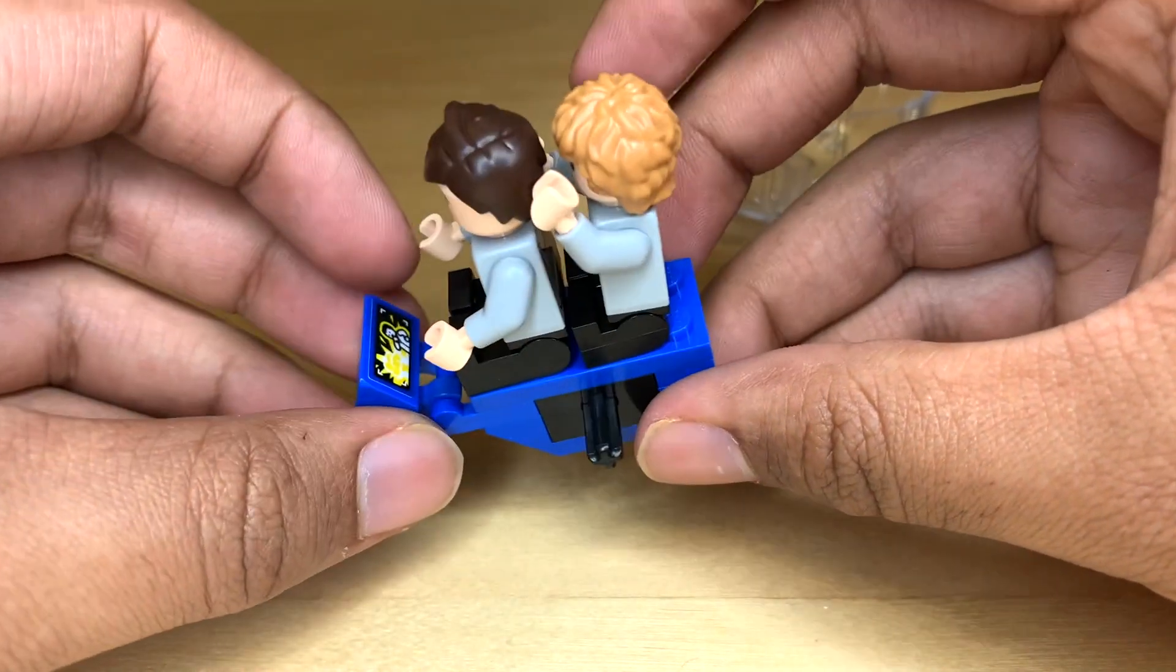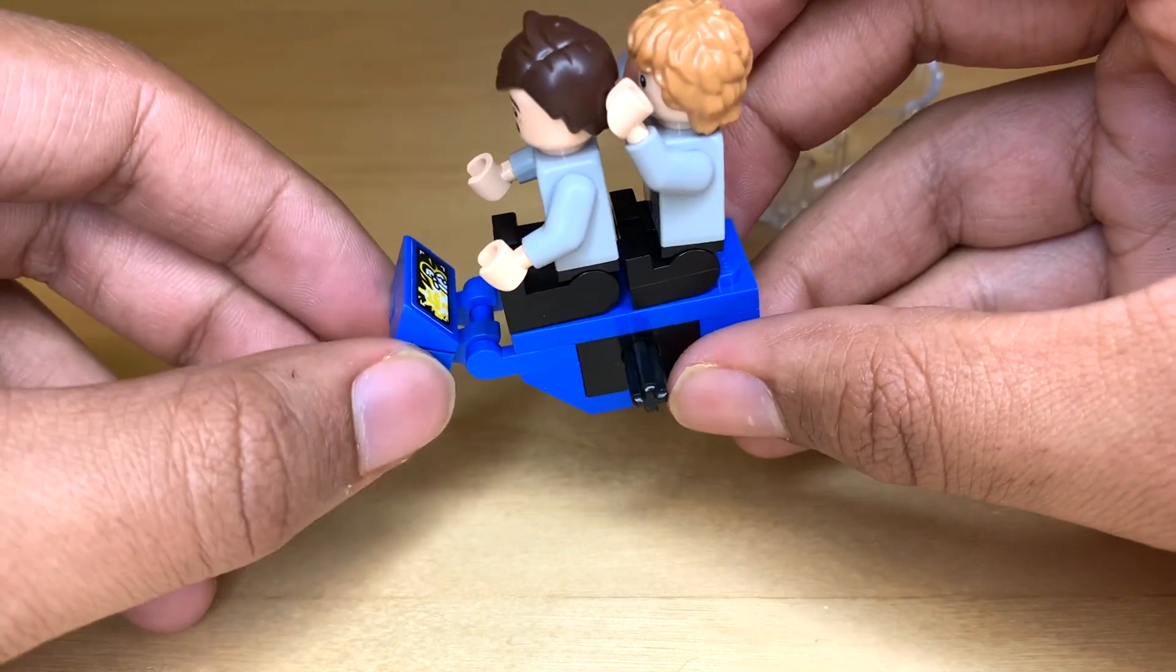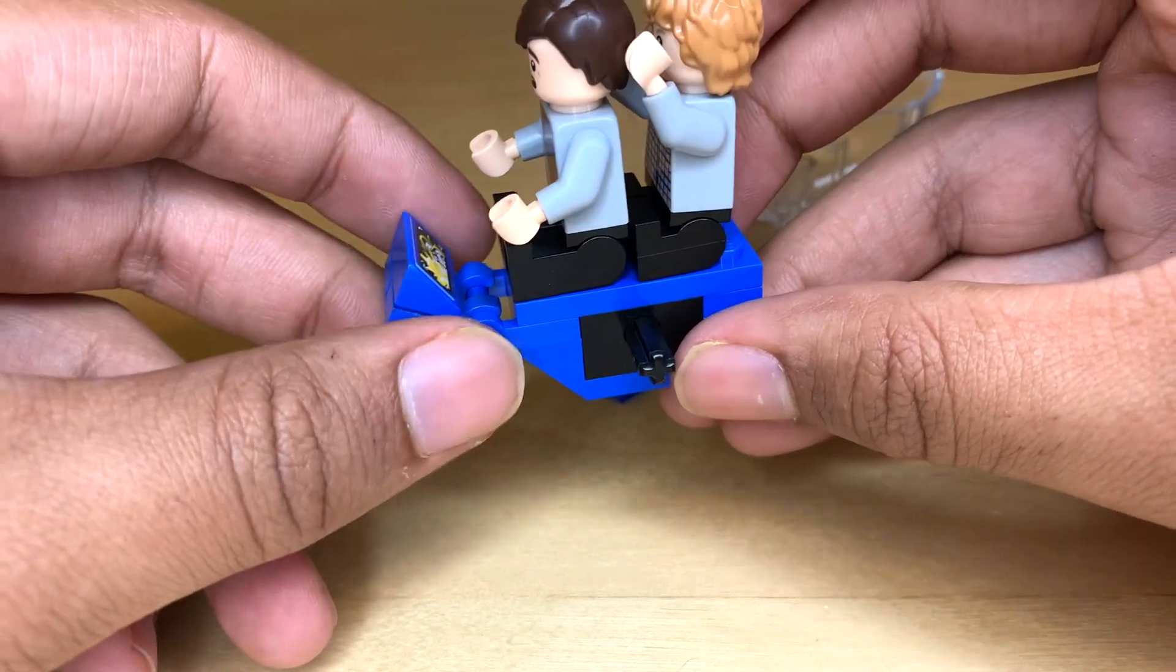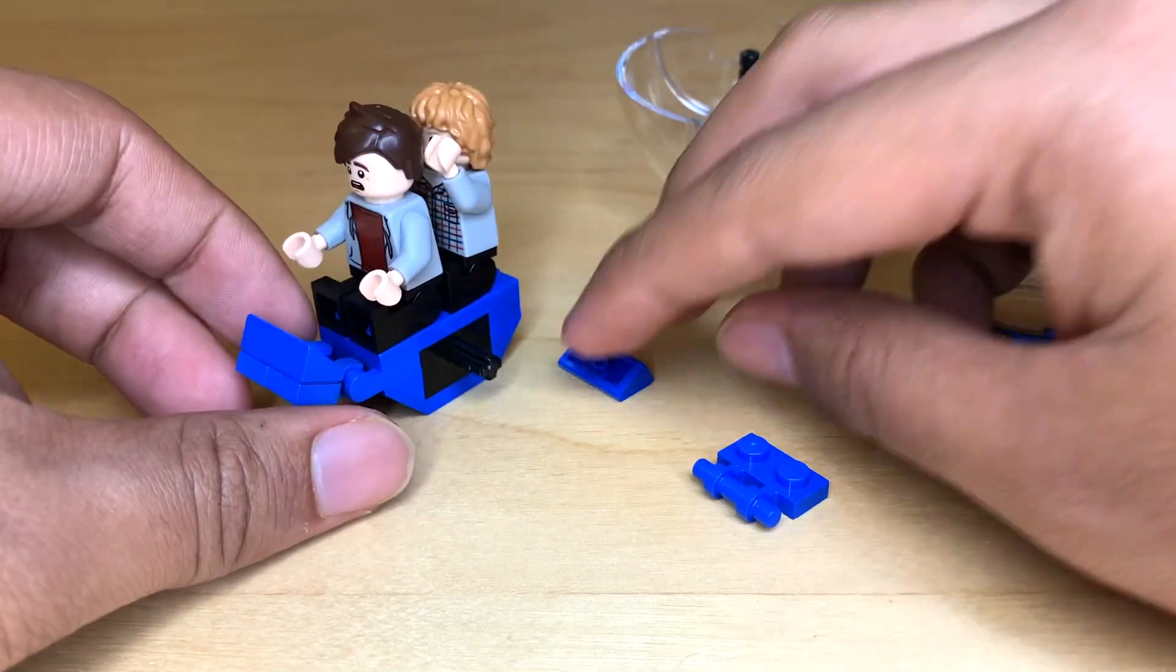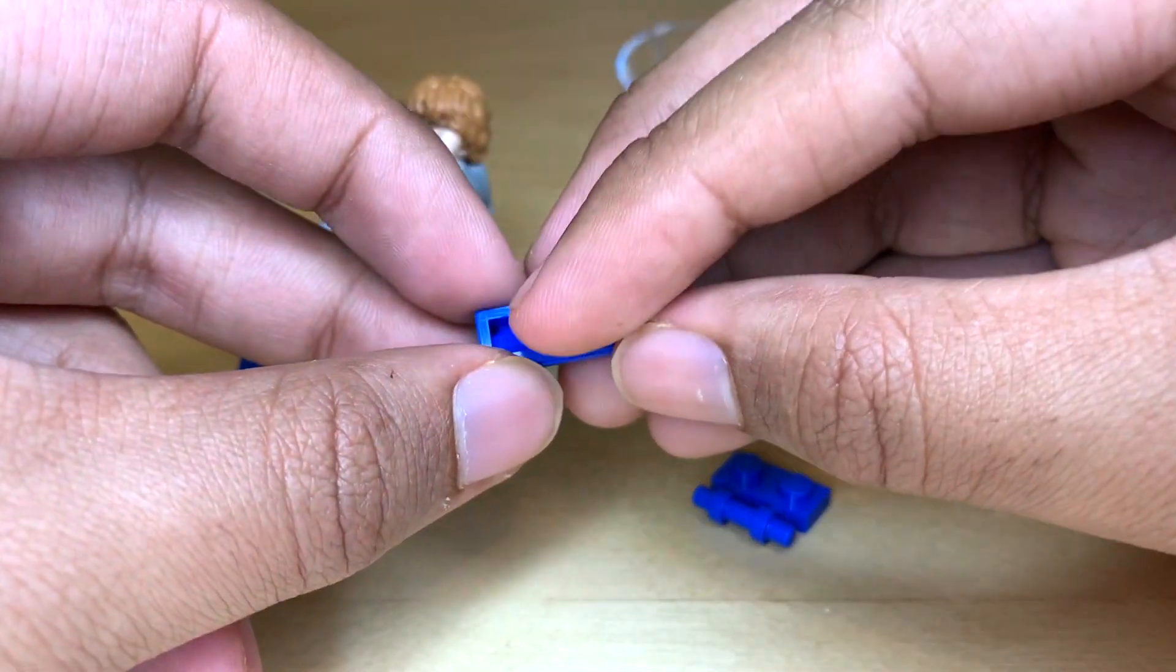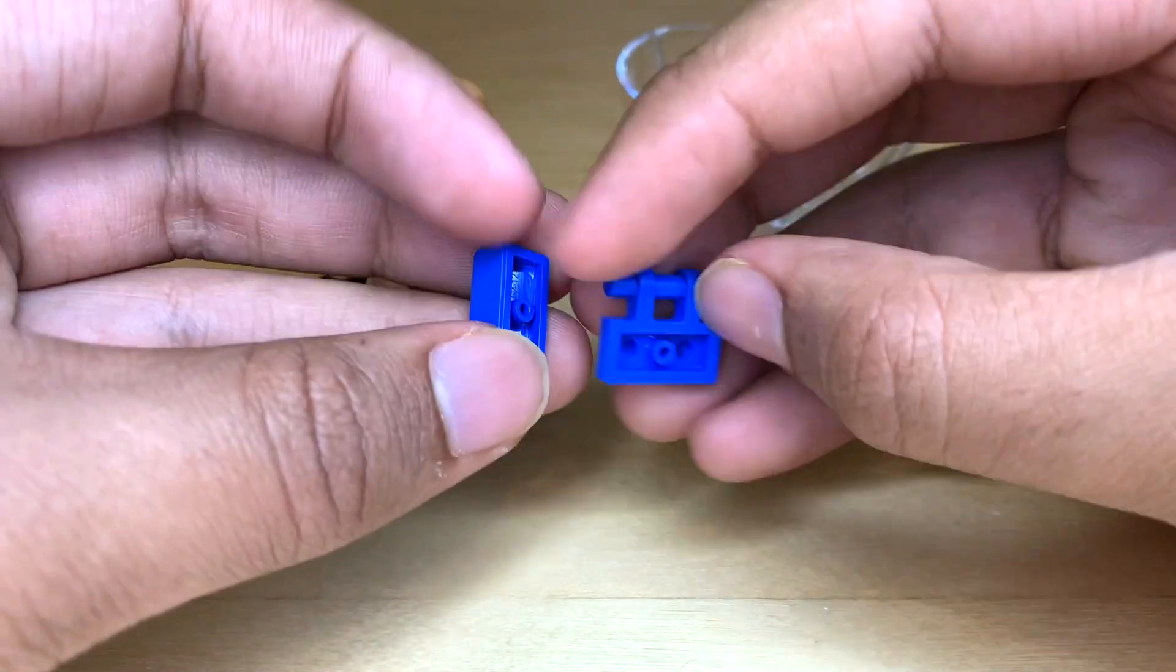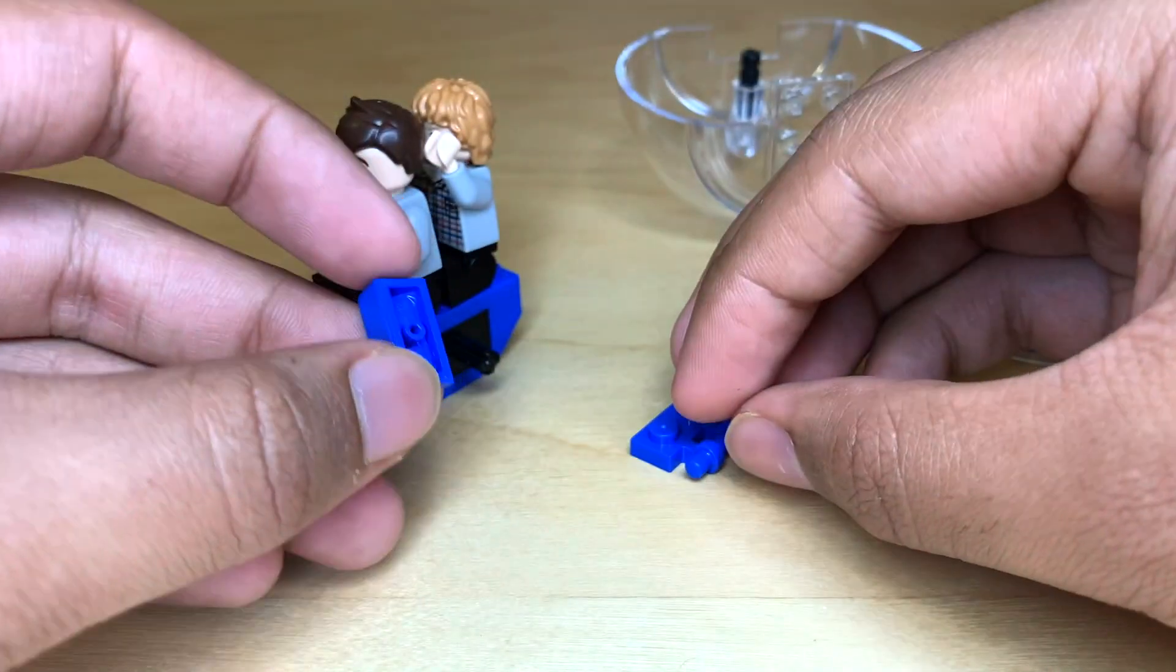But the reason, you might be asking, why can't you just use one of these 1x1s with clip and then put it onto the piece with the bar that already comes in the set? The reason that you can't do that is because cheese slopes have this piece in the middle, so they can't attach to just one stud. It doesn't work like that.